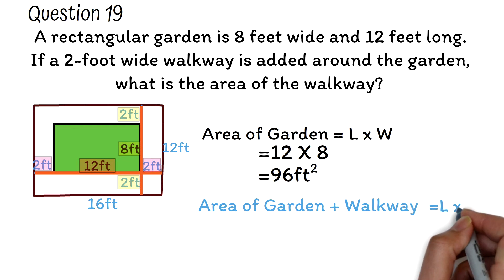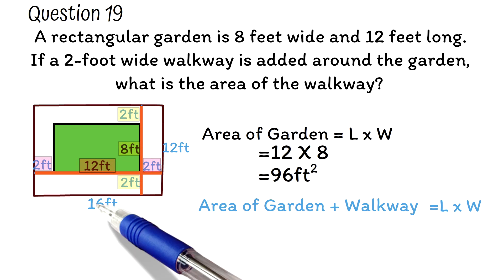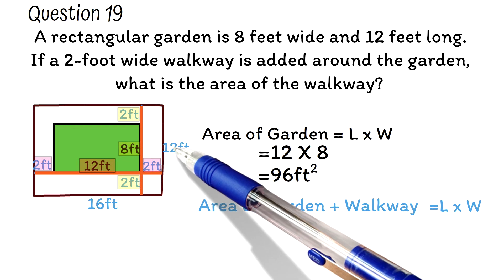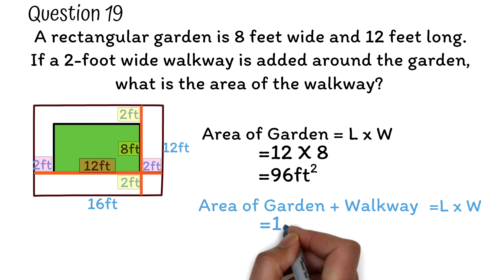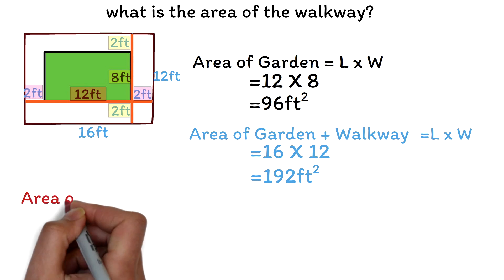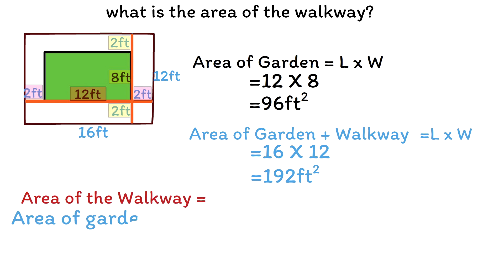So we have length times width. The length of the garden plus walkway is 16. The width of the garden plus walkway is 12. Multiplying 16 by 12, we will get 192 feet squared as the area of the garden plus the walkway. Now the area of the walkway alone is equal to the area of the garden plus the walkway, minus area of the garden.